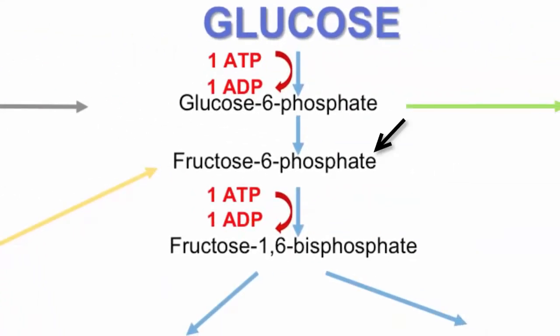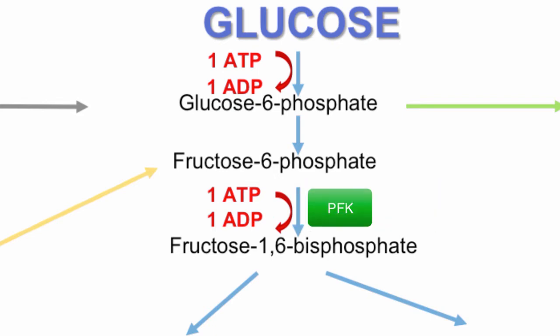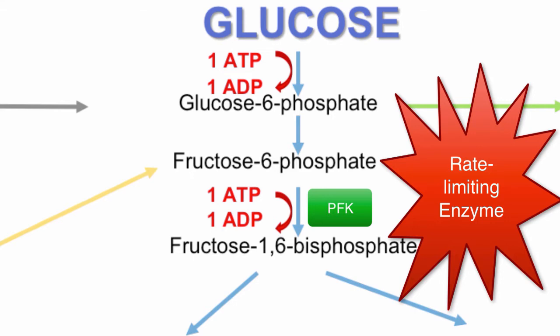The enzyme that converts fructose 6-phosphate into fructose 1-6-bisphosphate is phosphofructokinase, or PFK. PFK is probably the most important enzyme of this whole process because it is what is called a rate-limiting enzyme. Because PFK is so important, it is used as a blood marker when drawing blood to give biologists an idea of how active glycolysis is at the moment the blood is drawn.